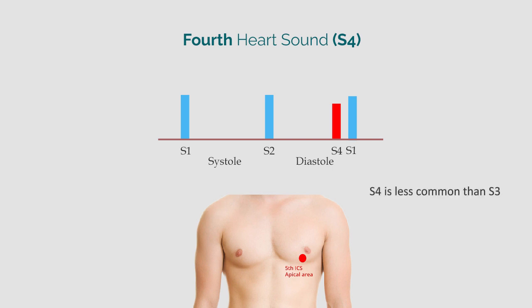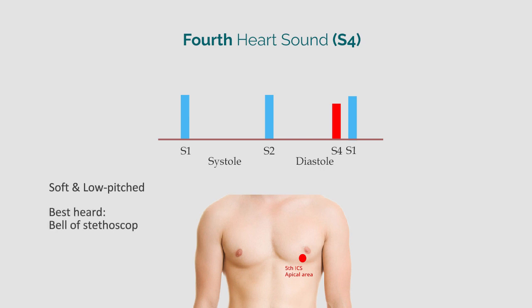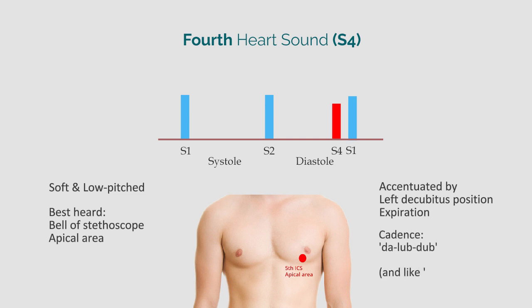The 4th heart sound is less common than S3. It is a soft, low-pitched sound like S3, and best heard with the bell of the stethoscope at the apex. The sound can be accentuated in a slight left decubitus position and expiration. It occurs just before S1. The cadence of S4 is lub-dub.